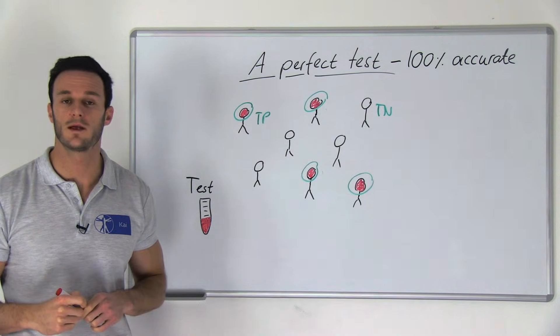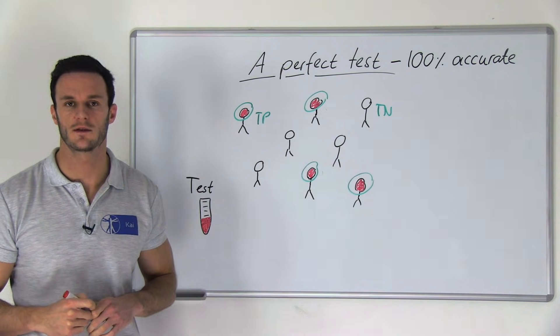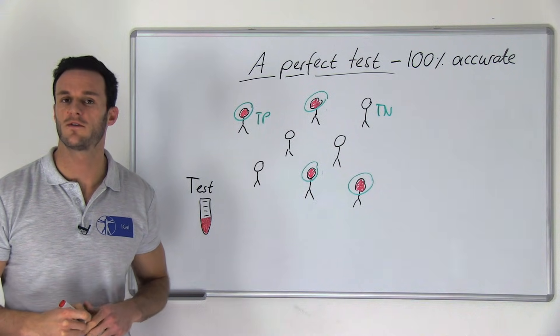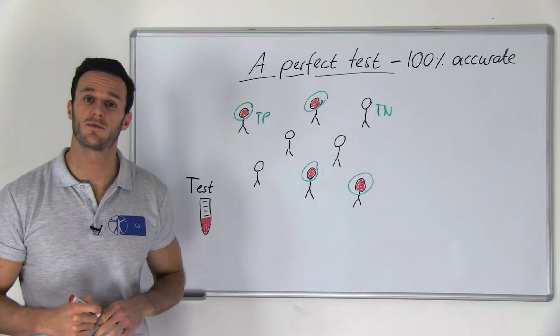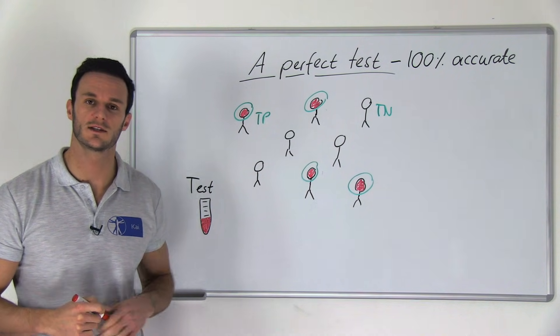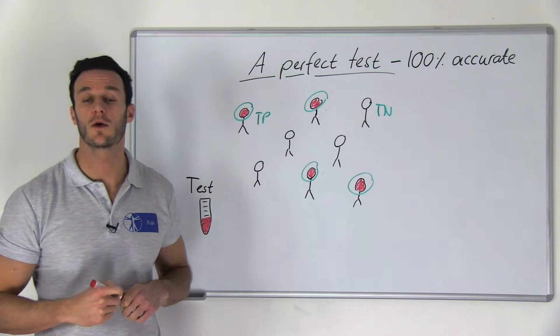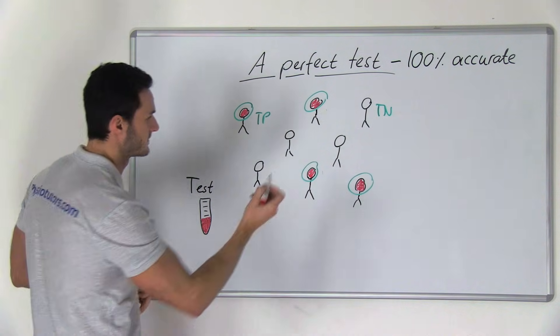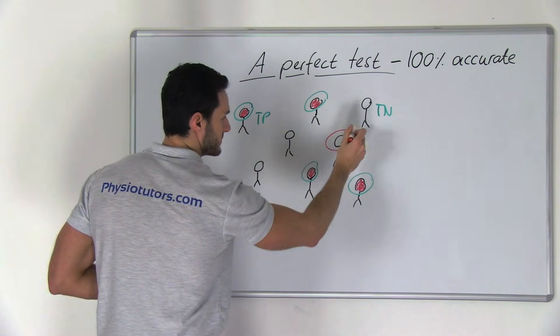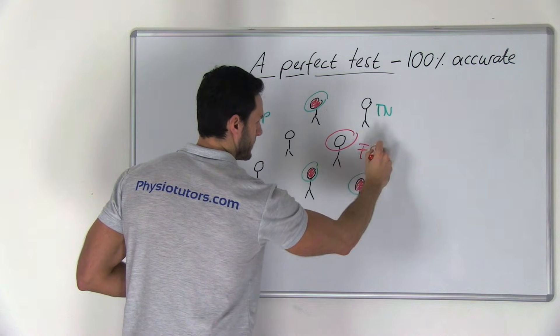This test would then be 100% accurate. In real life, however, a perfect test does not exist and we will have patients that are diagnosed with the disease but that are actually healthy, called false positive. So for example, this one would be false positive.